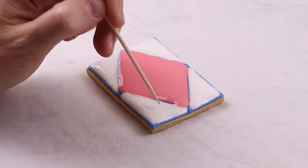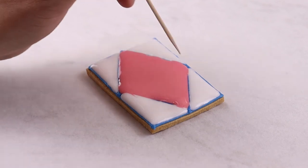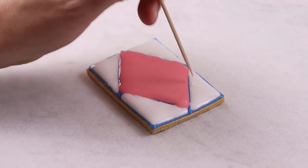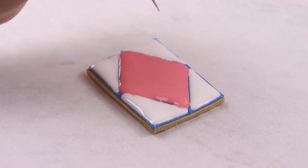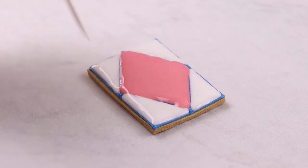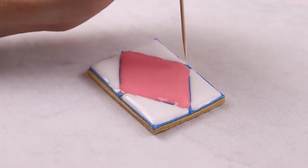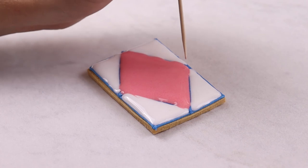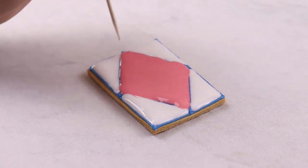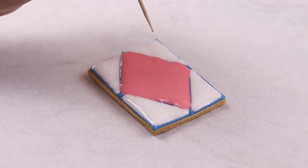One of our top tips for applying flood icing is to take a toothpick and pop any air bubbles that you see. Air bubbles will take approximately 30 seconds to rise to the surface of the icing when applied. The icing might look a bit darker where there is a bubble, so by popping any air bubbles you see you'll create a smoother and more consistent finish to your biscuit.